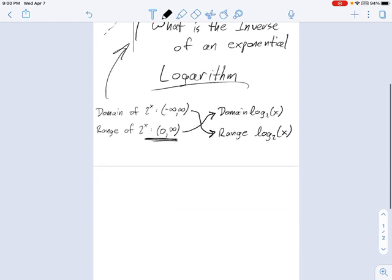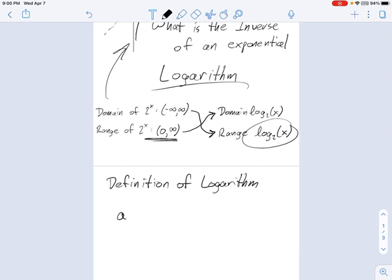And let's talk a little bit more about what this whole log 2x thing means. And we'll get into the definition of a logarithm for that. So what the definition of logarithm is, is it relies on the definition of an exponent. And if you recall from a previous lesson, we talked about a equals b to the c. This is an exponential equation. It's a very simple one.